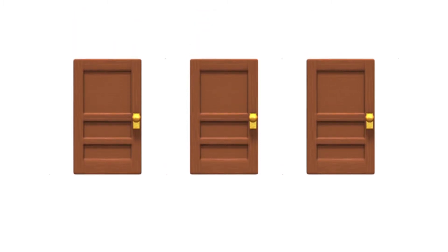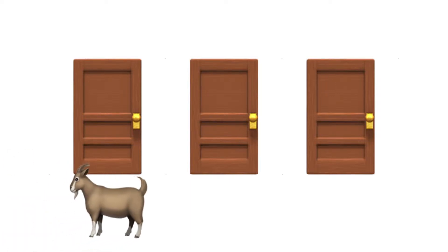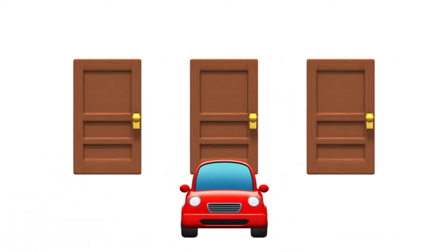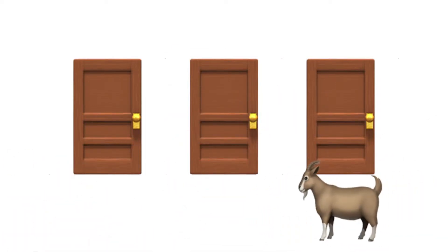The problem goes like this. Suppose you're on a game show and you're given the choice of three doors, where behind one door is a car and behind the others, goats.